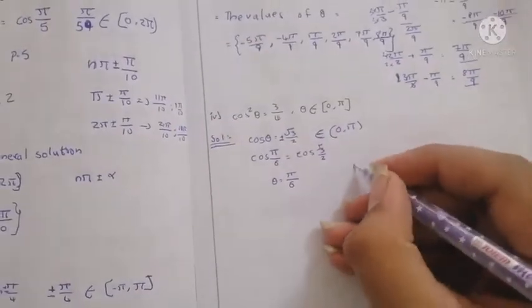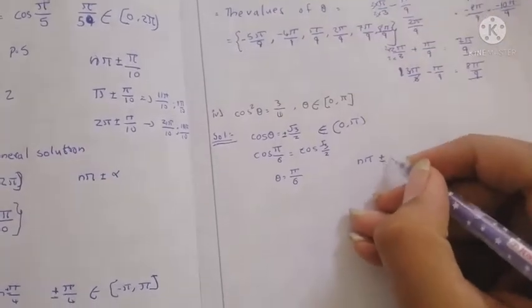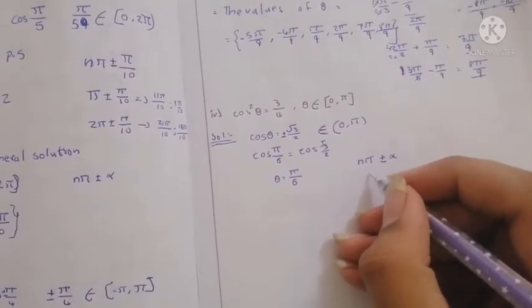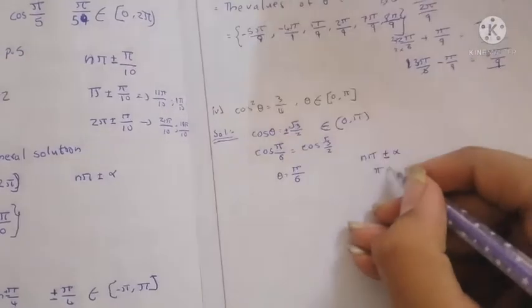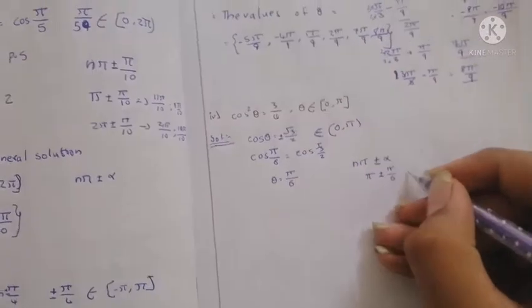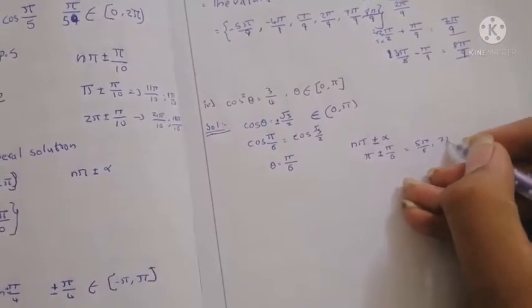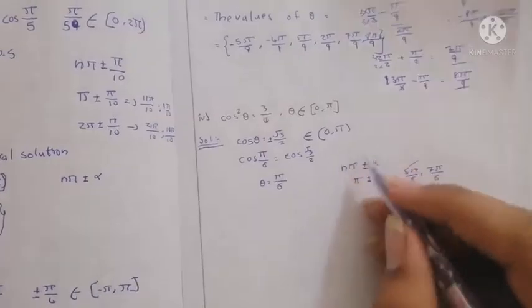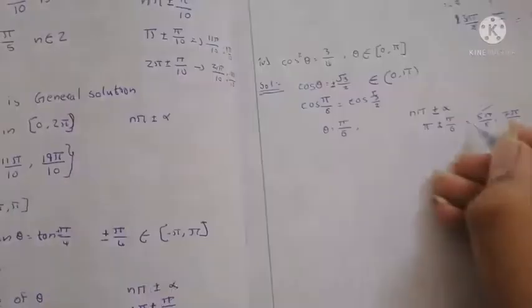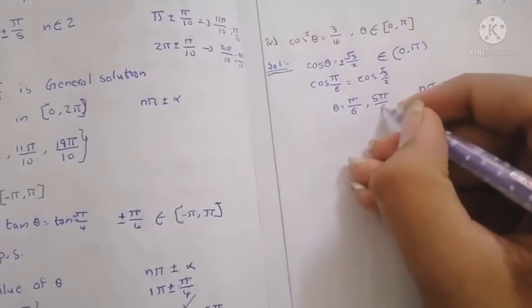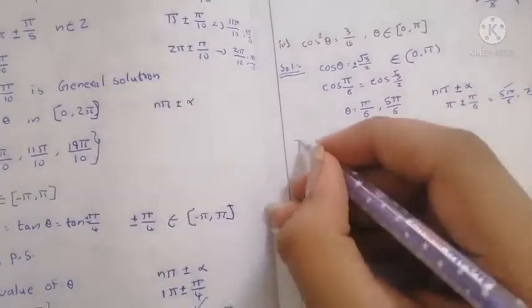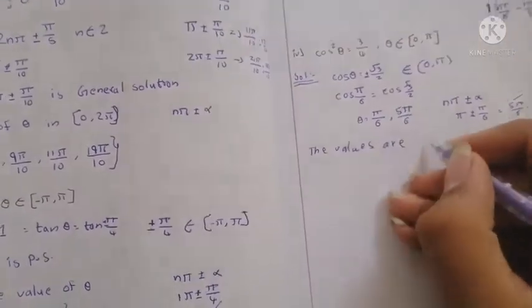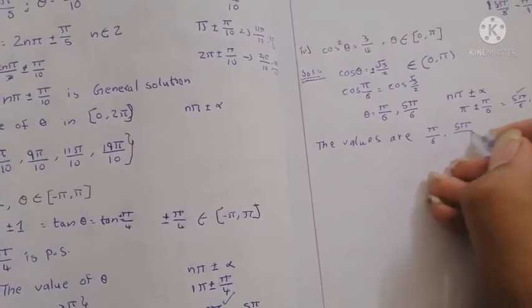Substituting n=1 in nπ ± π/6 gives π ± π/6, which equals 5π/6 and 7π/6. Since 5π/6 lies in [0, π], we get two values: π/6 and 5π/6.